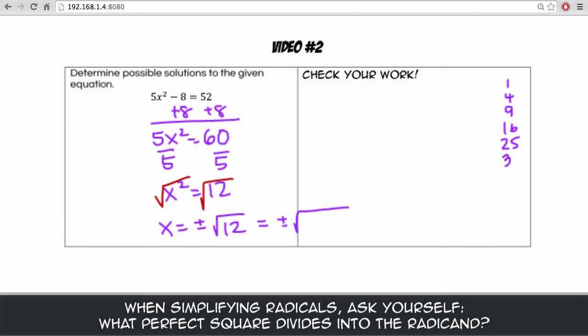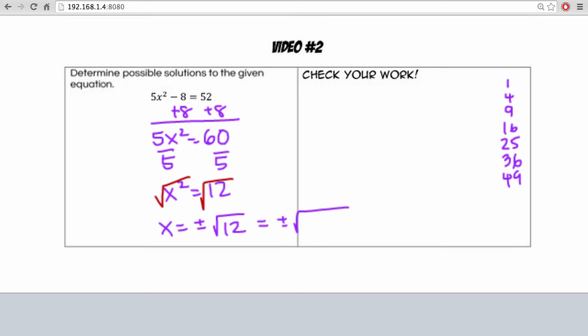25, 36, 49, and so forth. So which of those numbers divides into 12 nicely? Well, 4 does. 4 times 3 gives us 12.